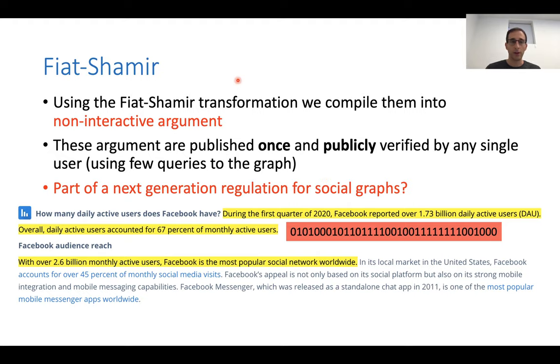One last application is we can use the Fiat-Shamir transform. So this is a transformation that in the random Oracle model is going to compile these interactive proofs to non-interactive arguments. So the soundness is going to be computationally now, and these arguments can be published once and be publicly verified by any user, any single user using a few small number of queries to the graph. So if you go back to this report by Facebook, they can now, after claiming that they have this many billion daily active users, they can just add a small proof here, which could be later verified by any user. Hopefully, maybe this will be part of the next generation regulation, like GDPR, just only for social graphs.